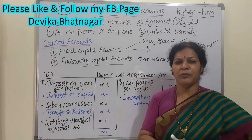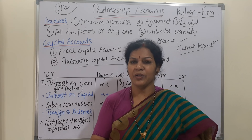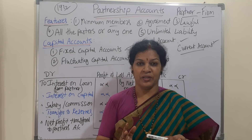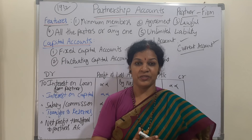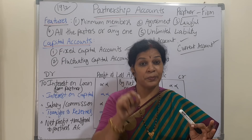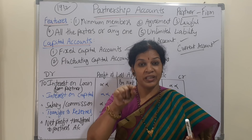Now, an important point — we have already learned about the profit and loss account in final accounts. We prepare it to know the profit or loss of the organization. On the debit side we write all indirect expenses, and on the credit side all indirect incomes. The balance we get is called net profit or net loss — if income is more than expenses we get a profit; if expenses are more we get a loss.